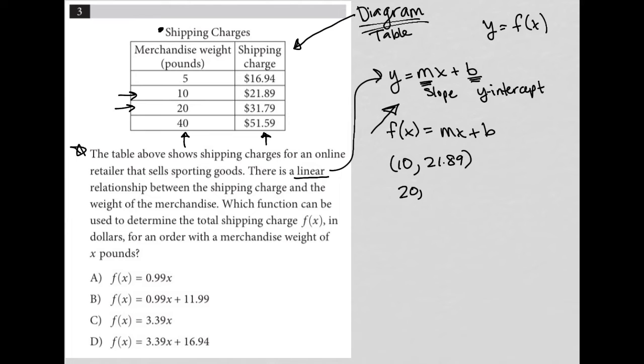And when the shipping weight is equal to 20, the shipping charge is equal to 31.79. So when I use these two bits of information, I can fill in my equation. So I can find my slope by using the equation Y2 minus Y1 over X2 minus X1. Again,